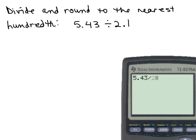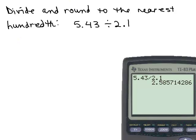Then I would just put in the calculator 5.43 divided by 2.1, depending what kind of calculator. I'm using a TI-83 plus, and what I see in my calculator is this number, 2.5857 and so on.